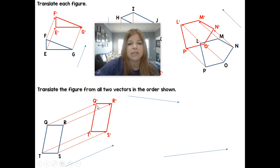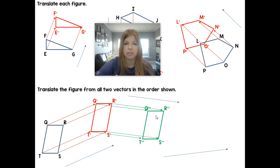Then if I was to follow the second vector, Q prime now would become Q double prime. So now I'm taking this length and that's what I'm copying and making parallel from Q prime to make Q double prime. And I would do the same thing with each point: R double prime, S double prime, T double prime, and I have my new image.